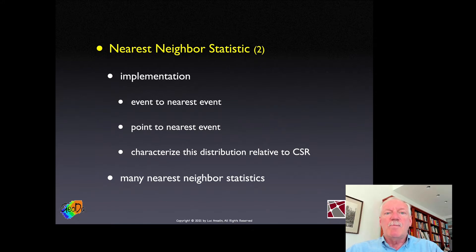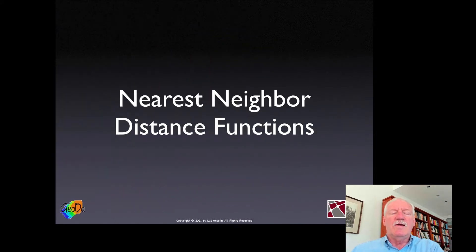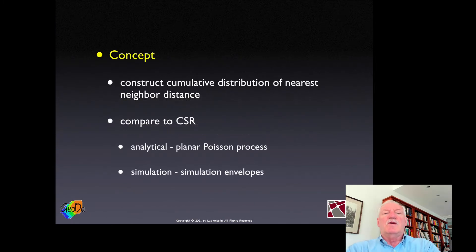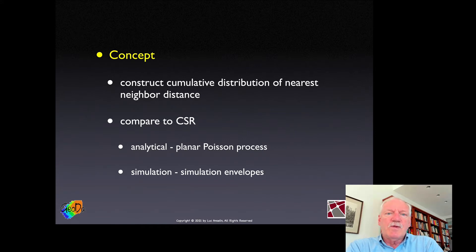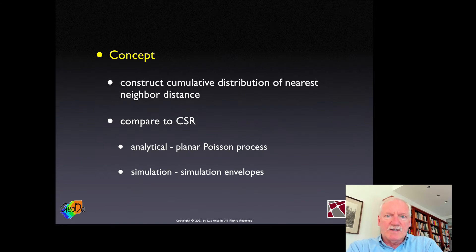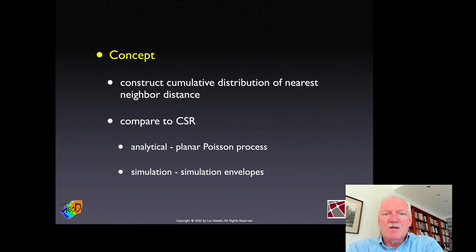There are many nearest neighbor statistics in the literature. We'll go over a few of these distance functions, also referred to as the letter functions. For each event we take the nearest neighbor distance, then plot the cumulative distribution of these nearest neighbor distances as a function of the distance. That curve will be compared to what it would be under complete spatial randomness, represented by a planar Poisson process. We can either do the math, which is simple using the Poisson distribution, or use a computational approach called a simulation envelope.